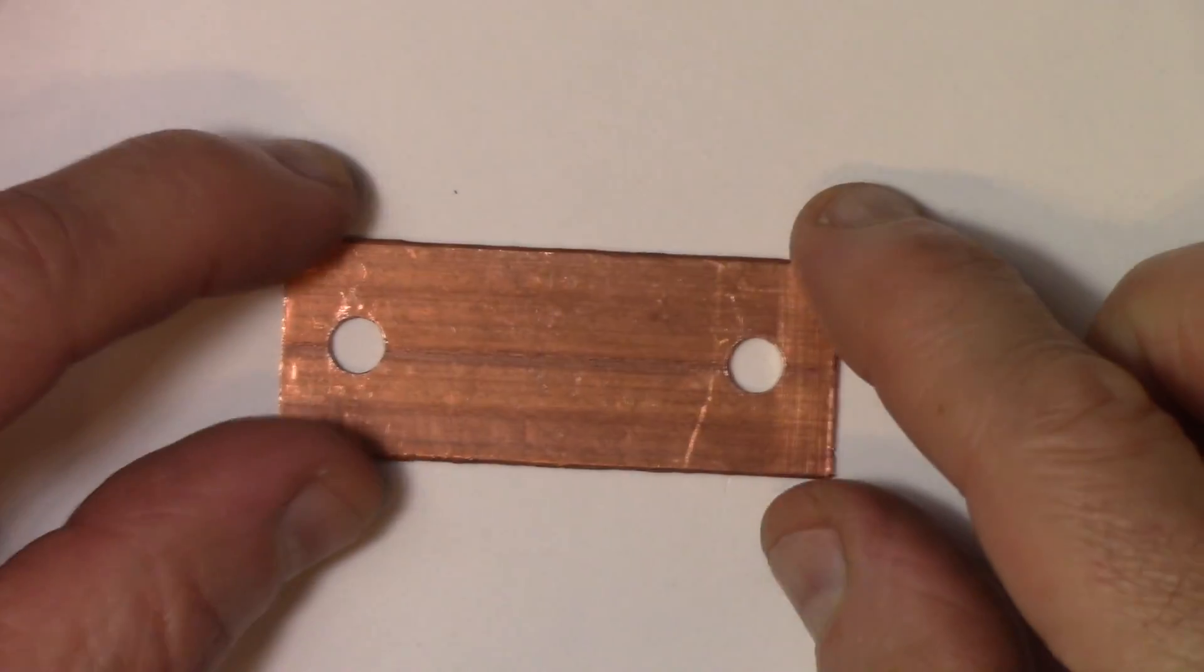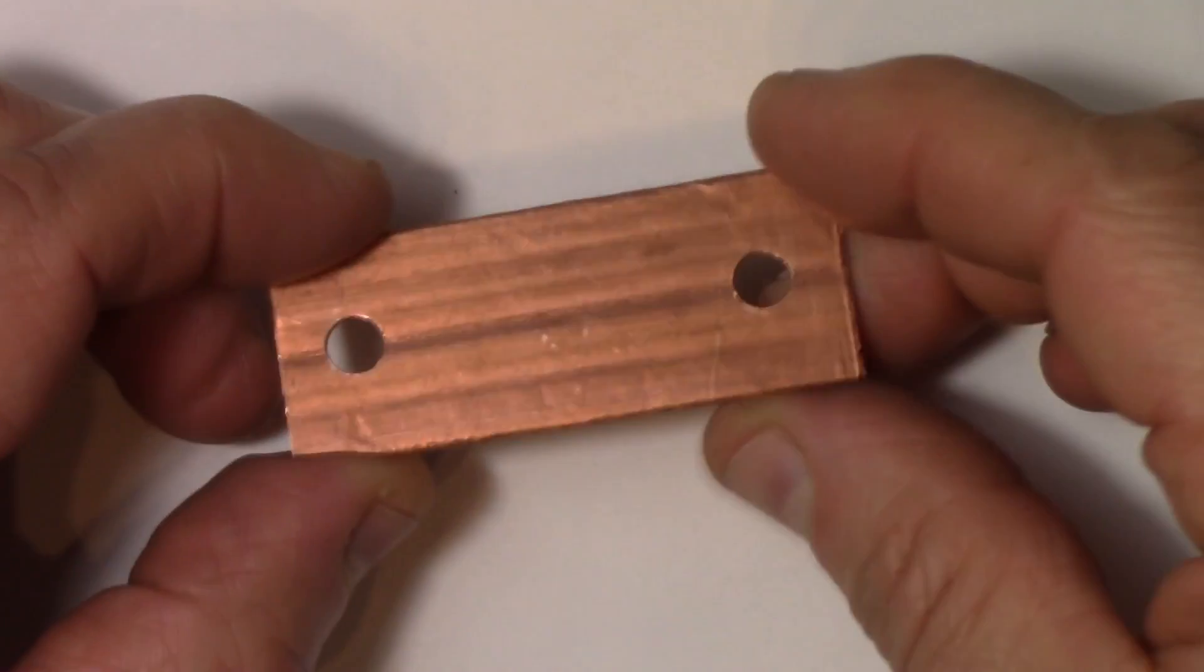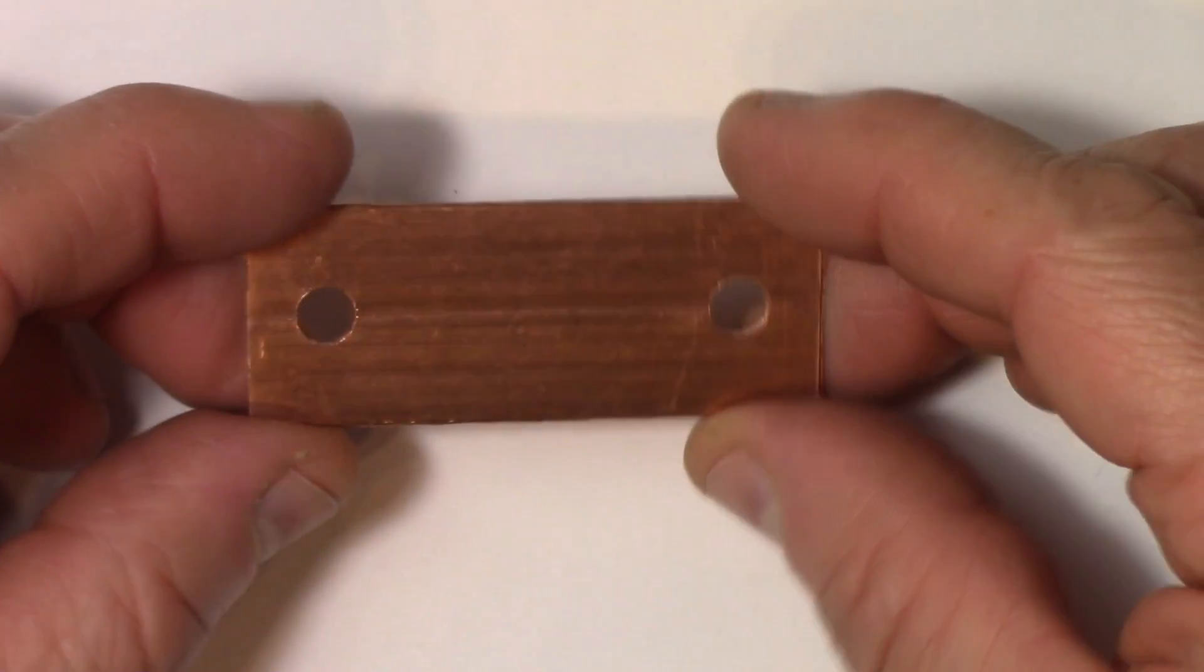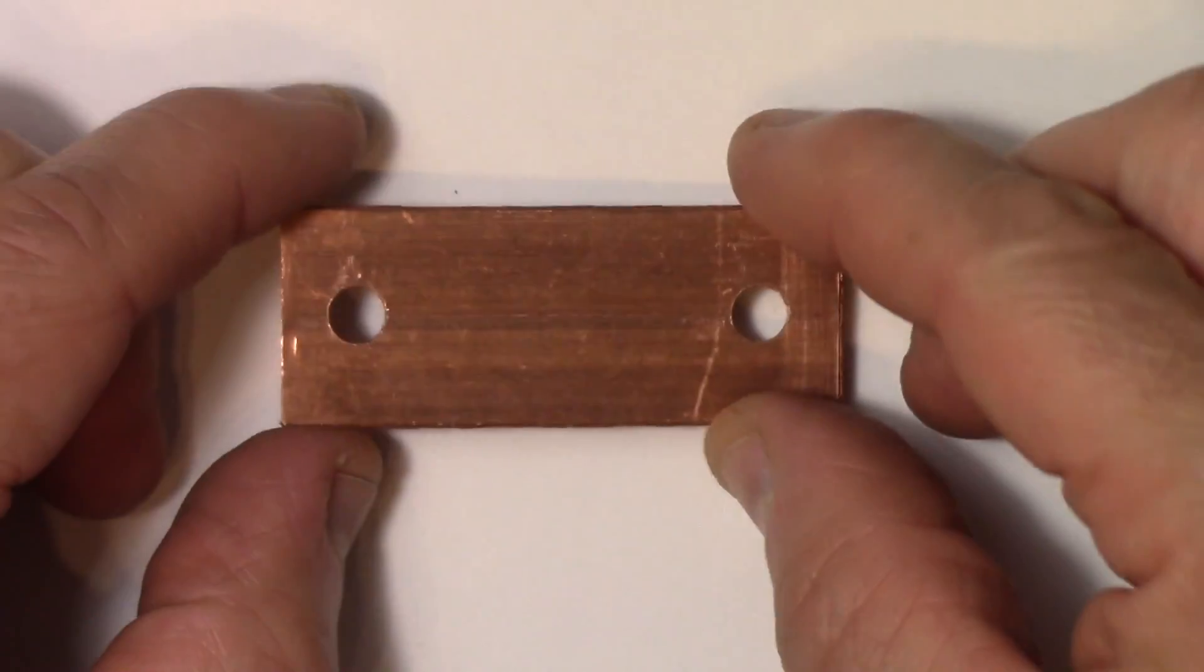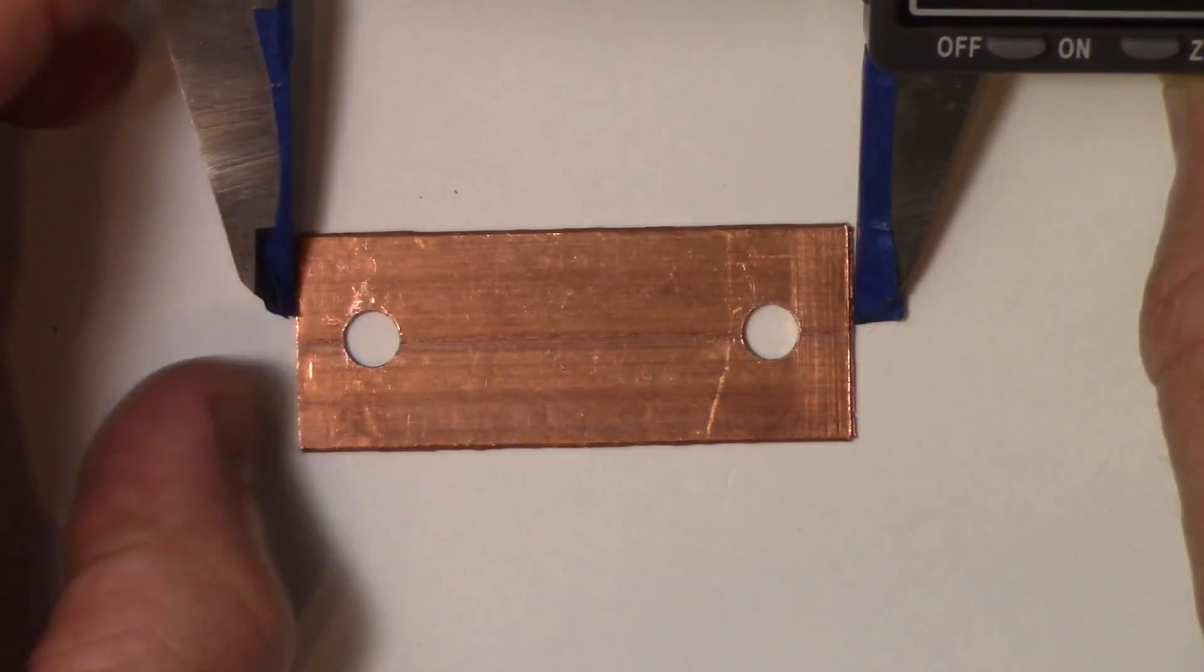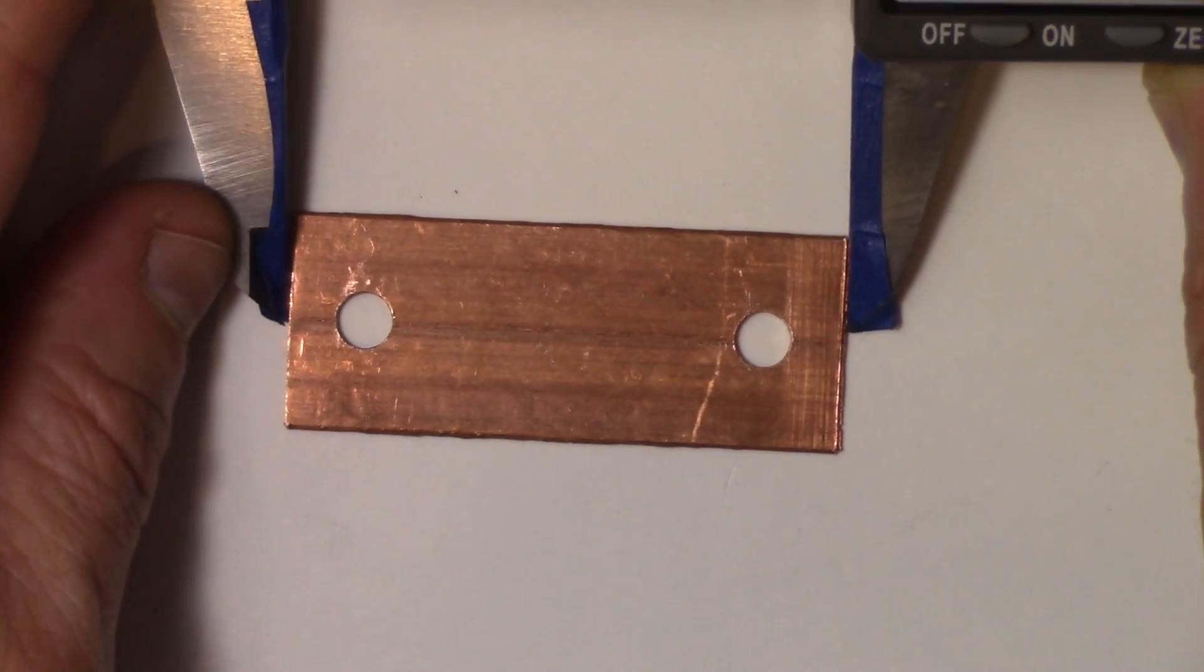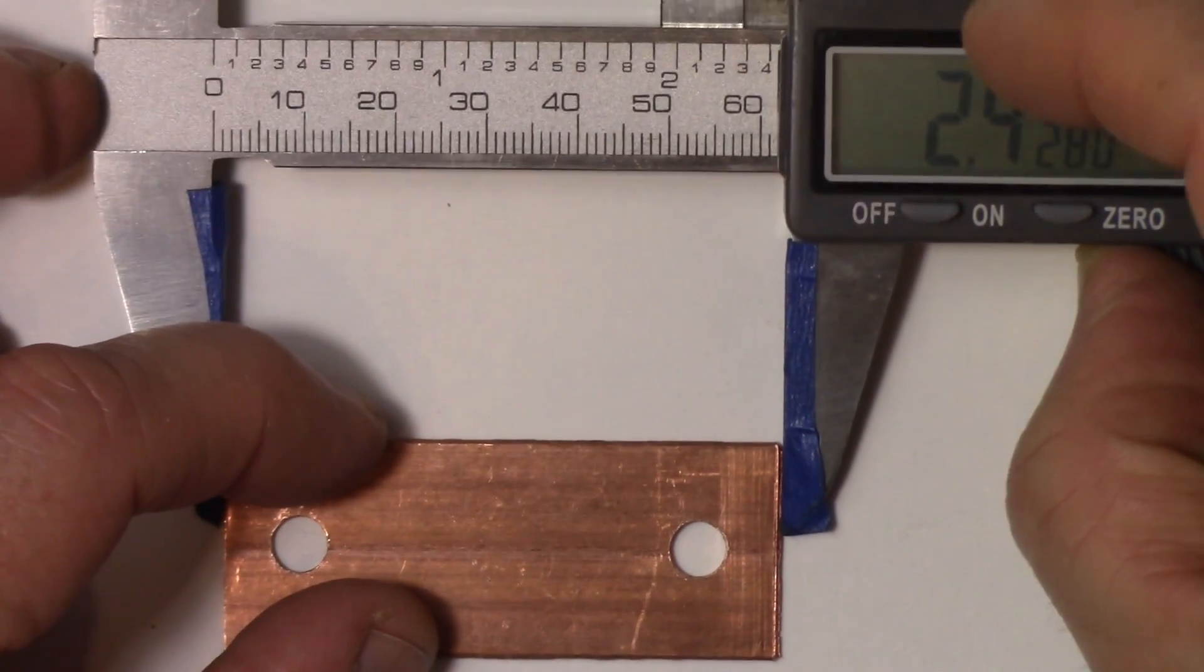Here we have the bus bar from our battery, the 38-120 cells. This is one off that battery that I made. As you can see, really nice product, really nice piece. Let's get into the measurements because I'm sure you guys are going to want to know what size these are if you're making bus bars for 38-120 like I did.